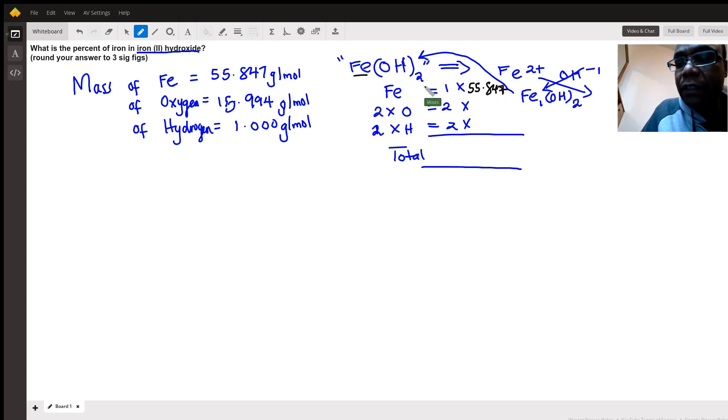We have one iron in the formula. We have two oxygens and we have two hydrogens, so I'm multiplying two times 15.994 and then two times one, because each hydrogen has a mass of one. Then we'll sum them up.